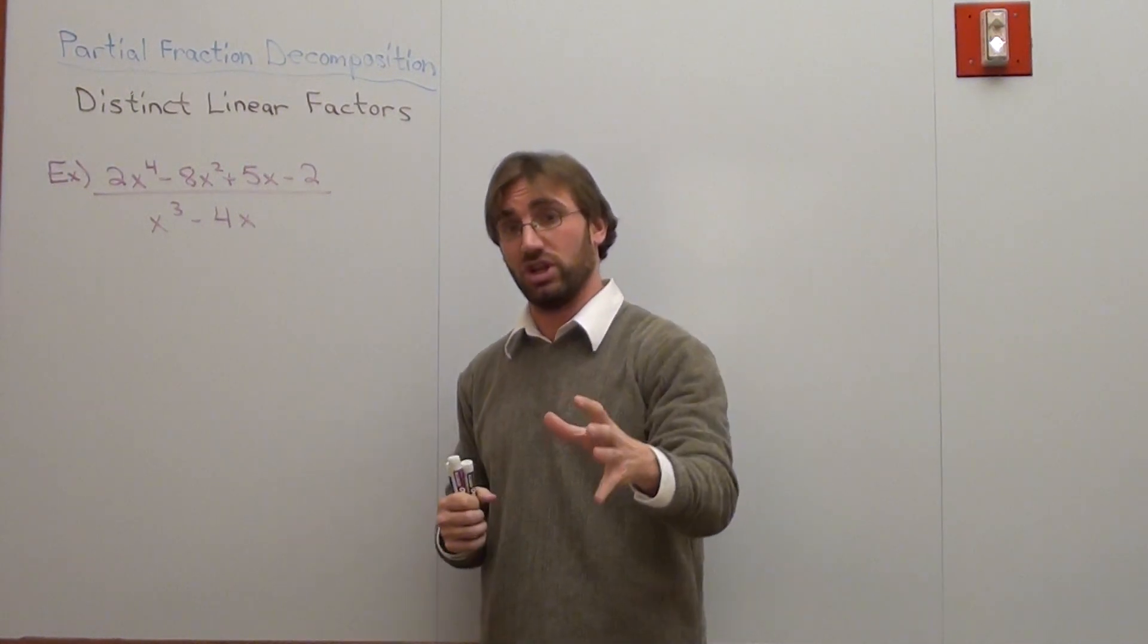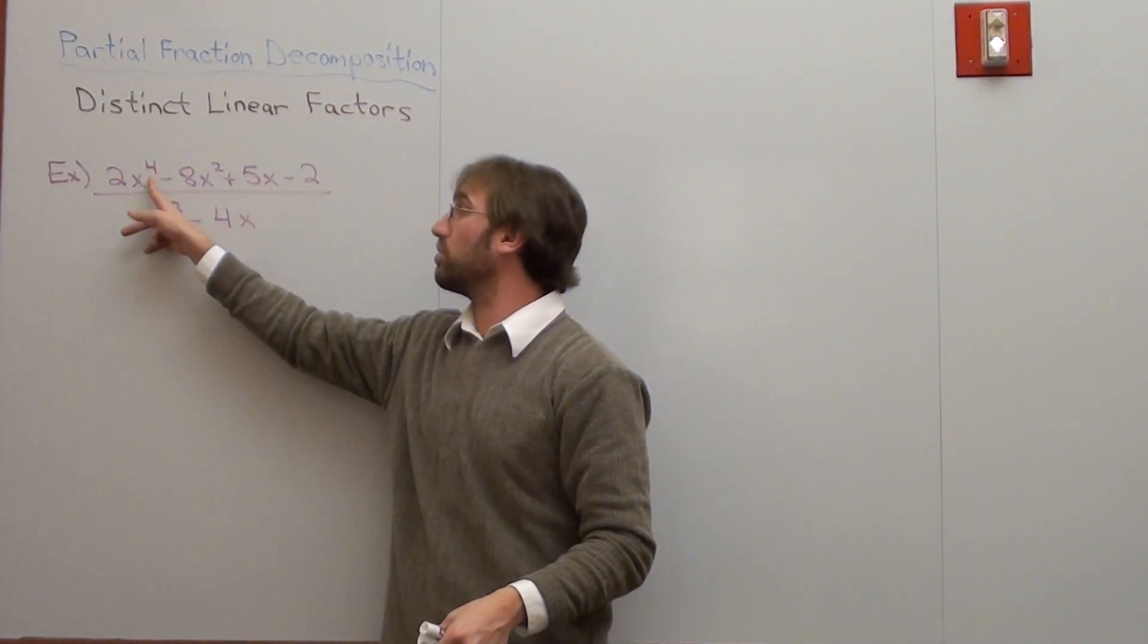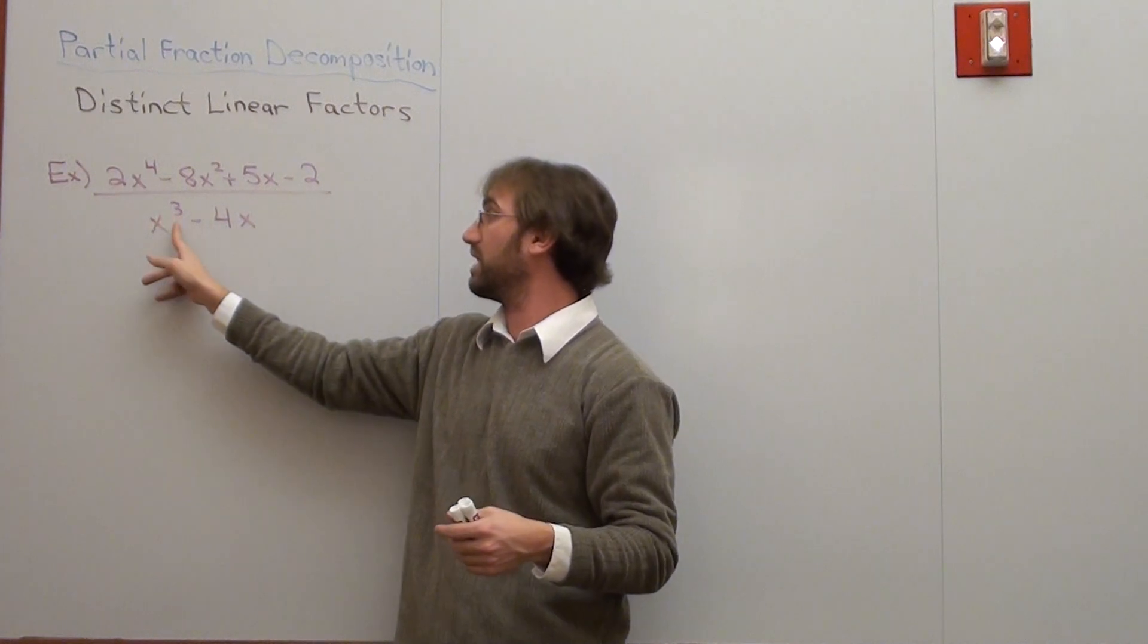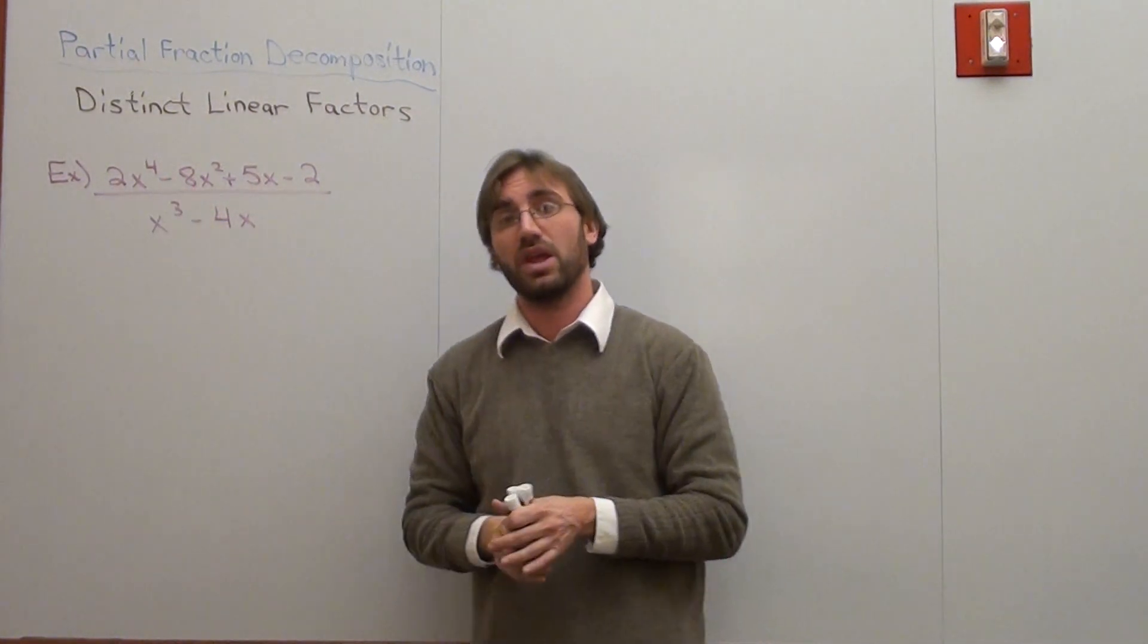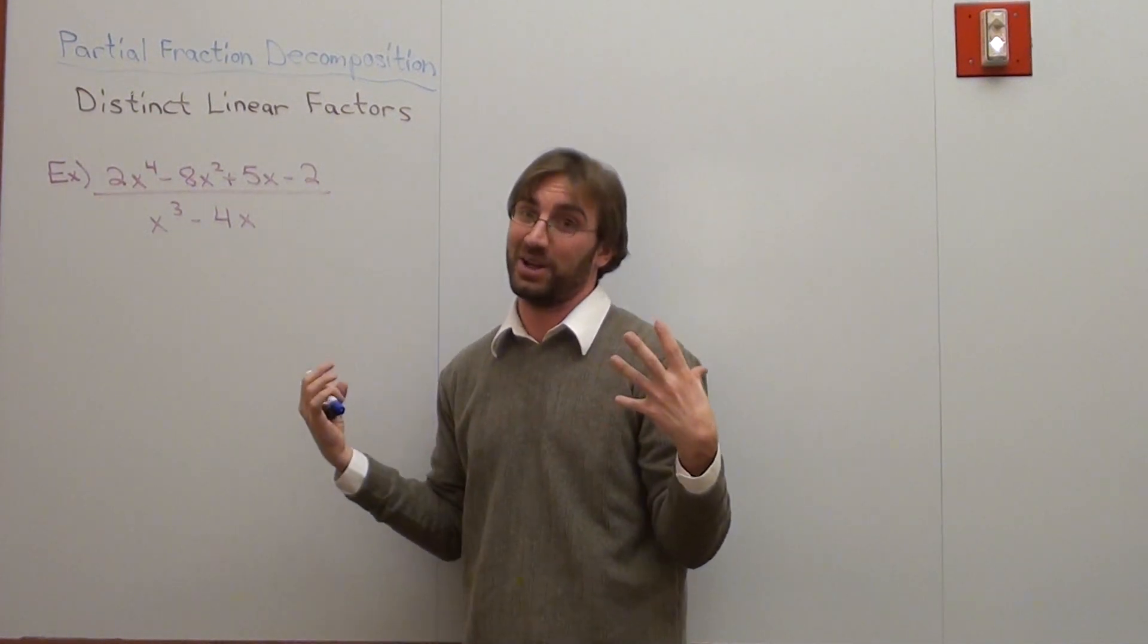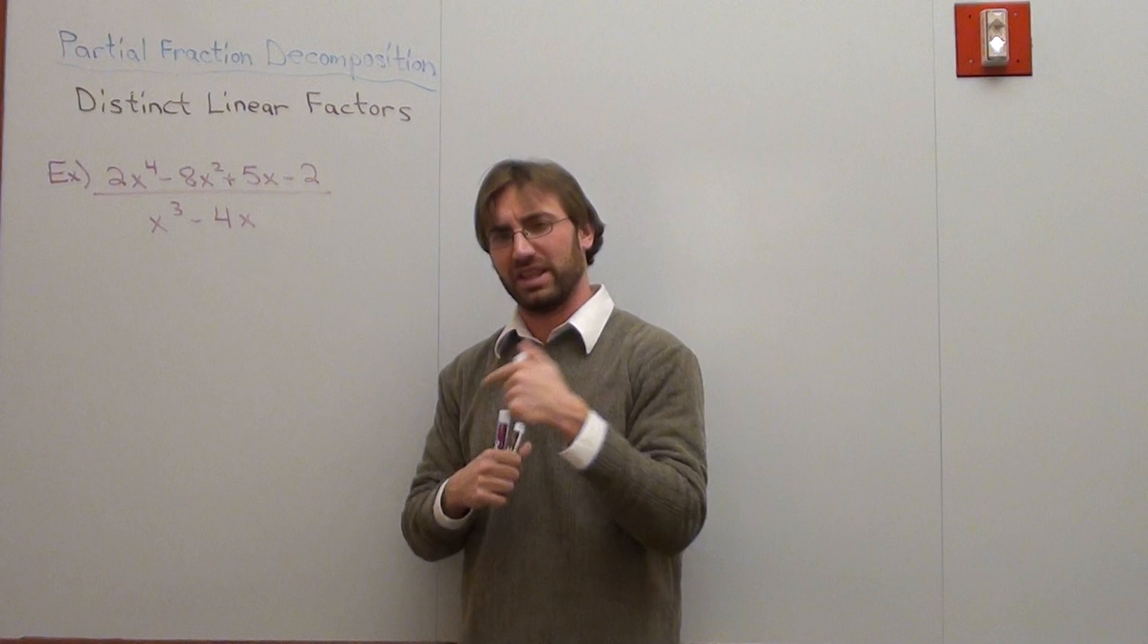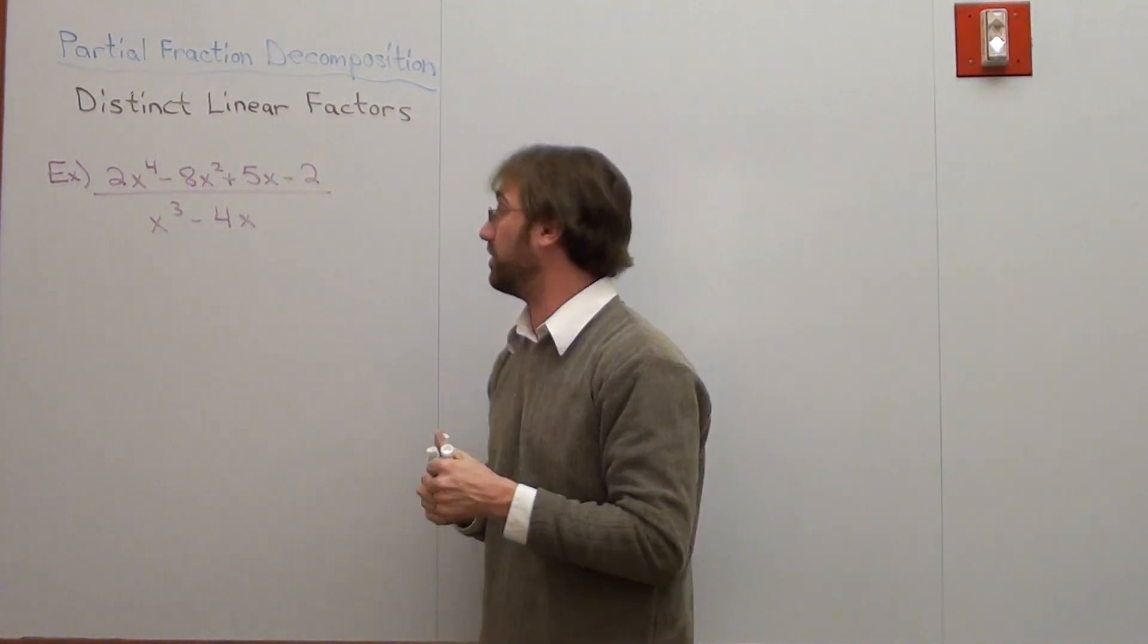Now one thing you have to know before we even start is that when you're doing partial fractions, the degree of the numerator has to be smaller than the degree of the denominator. In this case, that's not the fact. The degree of the numerator is bigger. So what we have to do is long division in order to get a result that's going to actually make this favorable for partial fraction decomposition. So we're going to go ahead and do that.